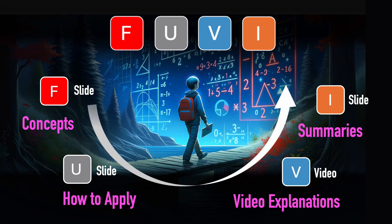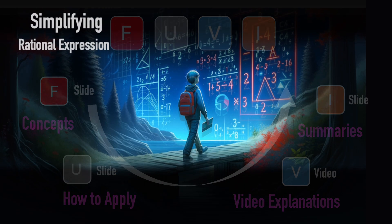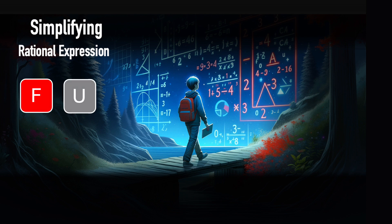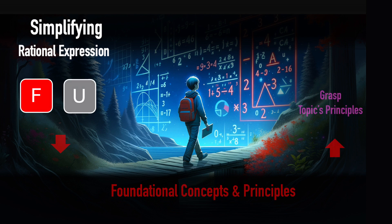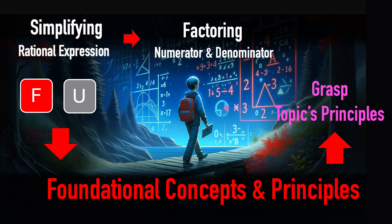How to use FUBI. Take this topic: Simplifying Rational Expressions. First, use the F and U buttons to quickly grasp the topic's principles — factoring the numerator and denominator, then cancelling the greatest common factor.